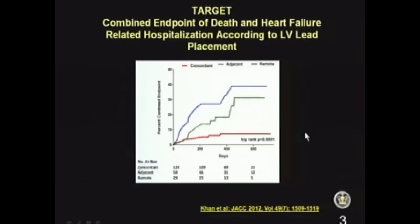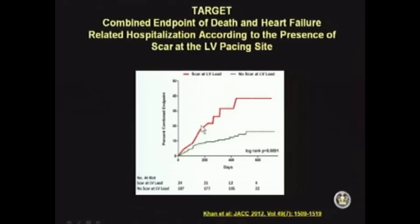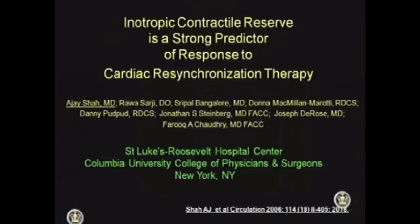They also looked at concordant versus adjacent versus remote segments. Concordant meaning the lead was placed exactly where echo identified the latest activating site; adjacent meaning a segment next to the latest activating site; and remote being more than two segments away. The survival curves spread out very nicely — if you put the leads exactly where the echo team tells you to, your prognosis is very good. The take-home message for the EP team is: listen to your echo team. They also found that if you place leads on scar identified by speckle tracking, those are non-responders; but place the lead where there is no scar, and the response rate is much better.